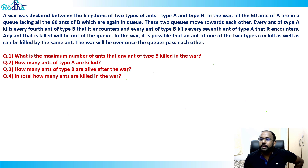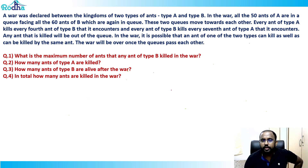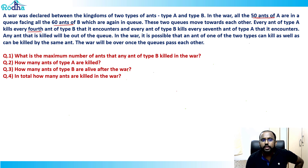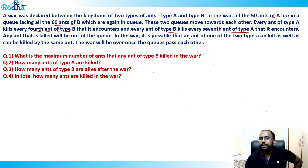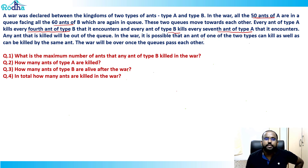Every ant of type A kills every fourth ant of type B, and every ant of type B kills every seventh ant of type A. Any ant that is killed will be out of the queue. It is possible that an ant of one type can kill as well as be killed by the same ant. The war will be over once the queues pass each other.